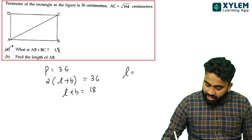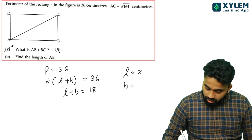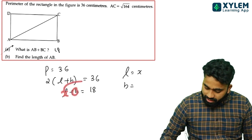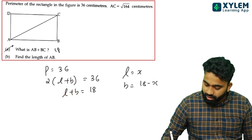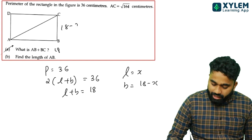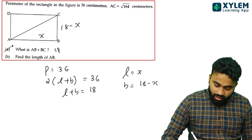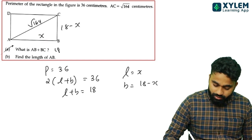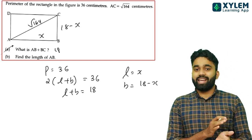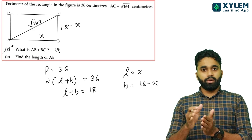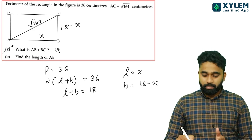If x is the length, then x is the distance. We will have x plus (18 minus x) for the two sides. The diagonal is root of 164. We have to set up: area equals x into (18 minus x), and length times breadth with x into (10 minus x).